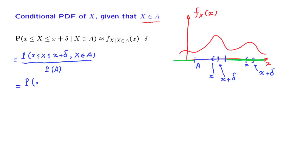The numerator simplifies to the probability that the random variable X takes values in the interval from little x to little x plus delta. Then we rewrite the denominator.